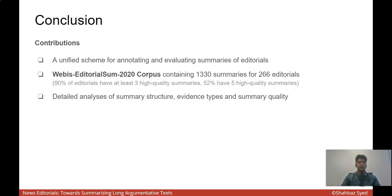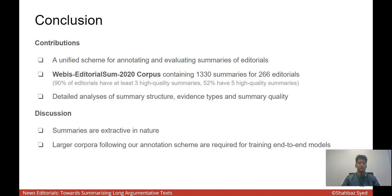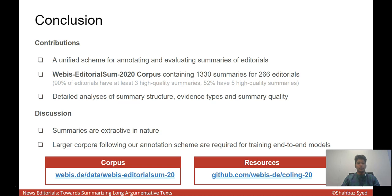In conclusion, we tackled the question of what a high-quality summary is by making three key contributions: a unified scheme, a corpus of 1,330 summaries where 90% of the editorials have at least three high-quality summaries and 52% have all five. We provided detailed analysis of summary structure, the various evidence types that contribute to argumentation, and the summary quality. Additional details such as the performance of automatic summarization models at extracting perceived segments and then comparison to humans can be found in our paper. Final takeaways: our summaries are extractive in nature since we did not ask workers to edit or rewrite our summaries, and we need much larger corpora that follow ideally our annotation scheme to train end-to-end models for effectively summarizing news editorials. You can find all the related resources, and I thank you for your attention and have a nice conference.